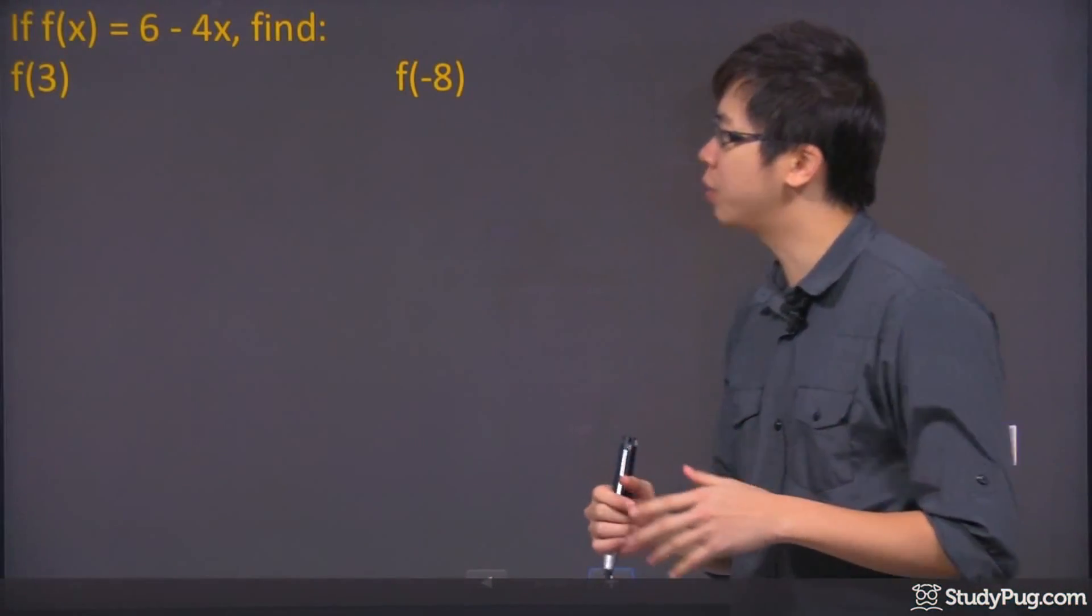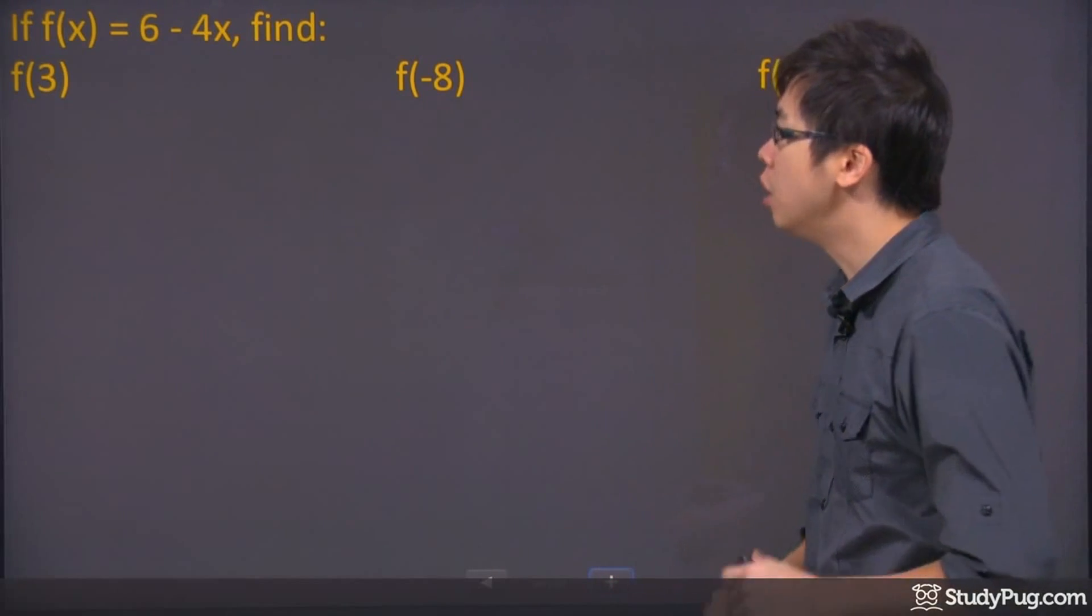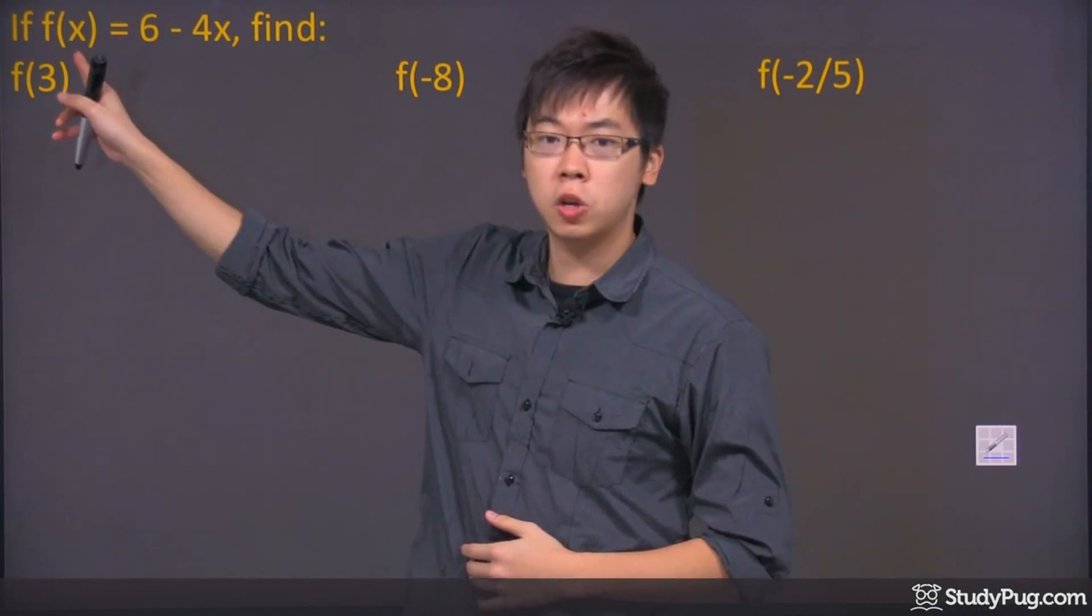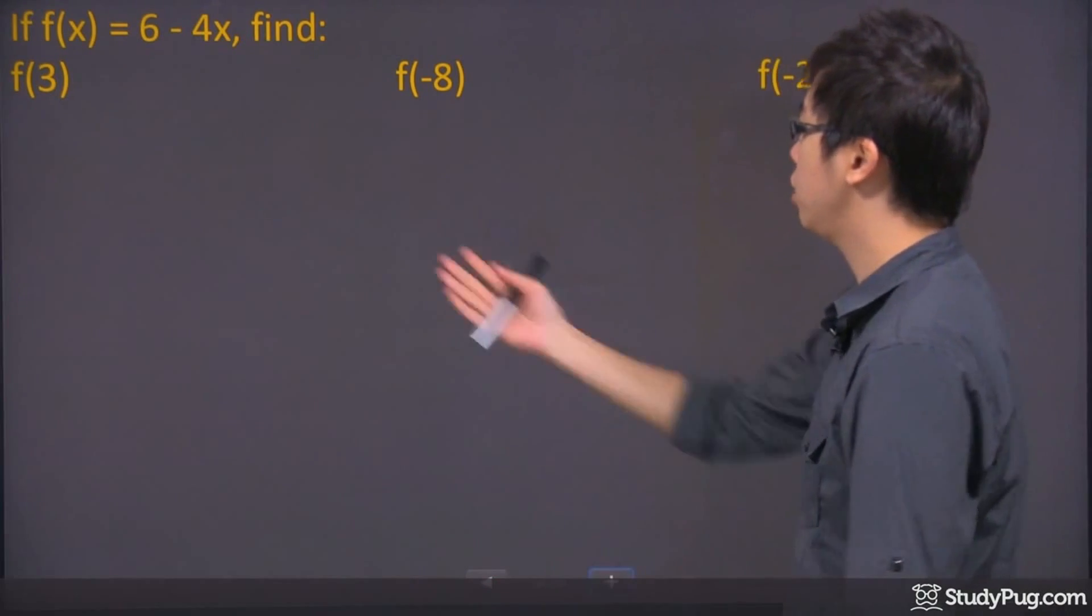Hi, welcome to this question right here. This is called the function notation. It's the input and the output stuff. So let's say we have a function right here that says f of x equals 6 minus 4x, right? So find the following.